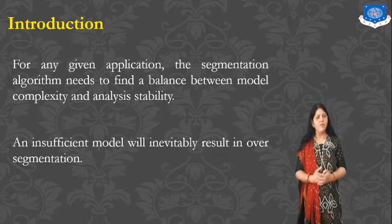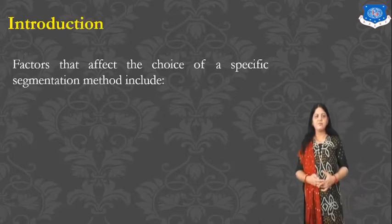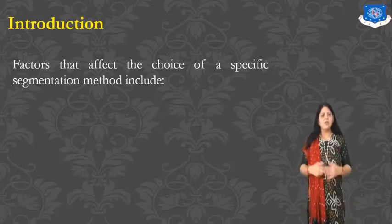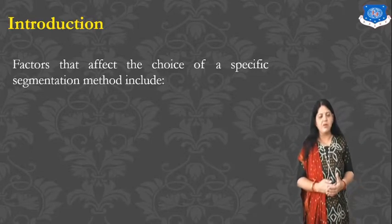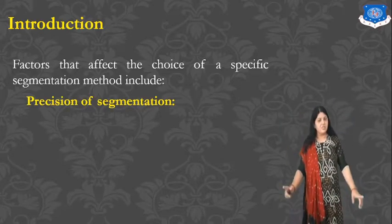An insufficient model will inevitably result in over-segmentation. Sometimes the movement can be very slow and then become very fast, so you have to find the particular frame in which the speed or distance would be the same, grouping those pixels together and processing each. Factors that affect the choice of a specific segmentation method include the following.